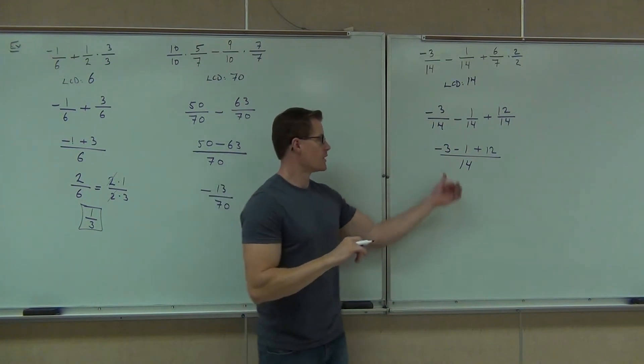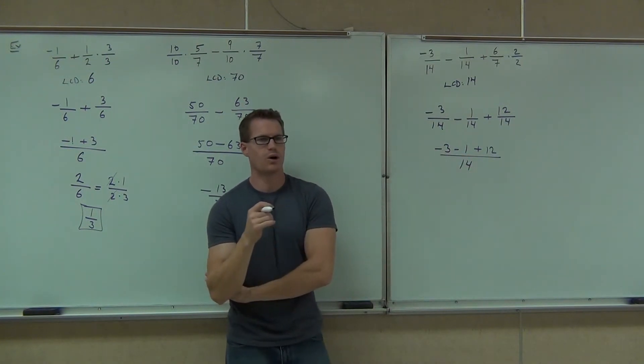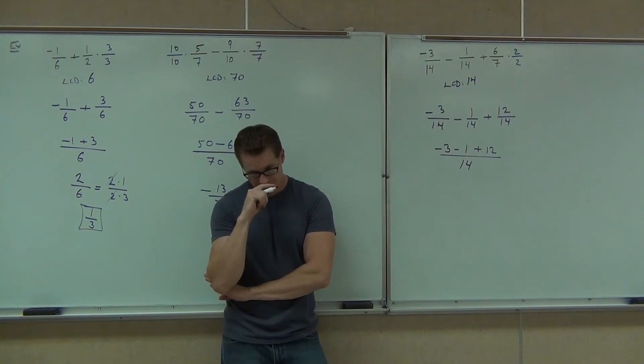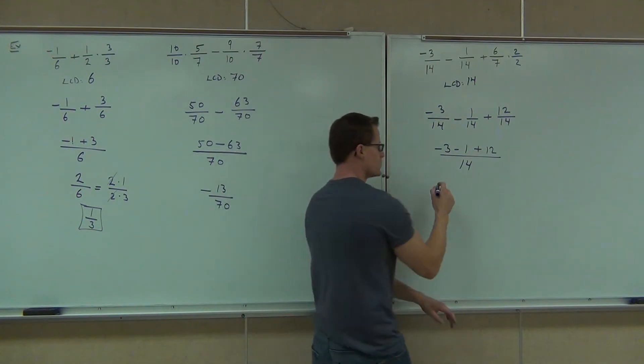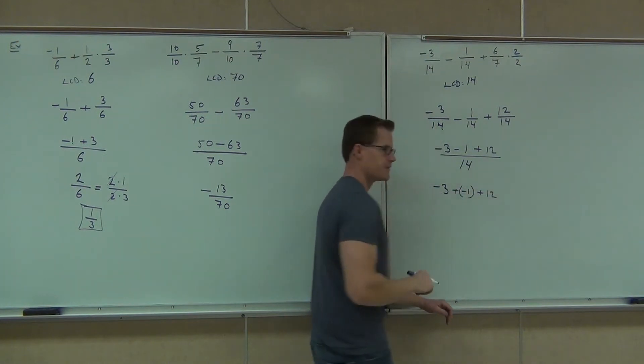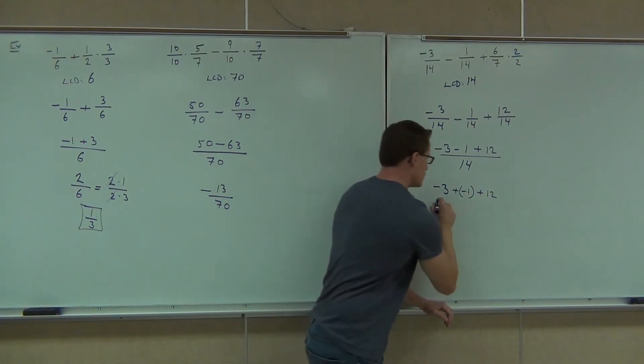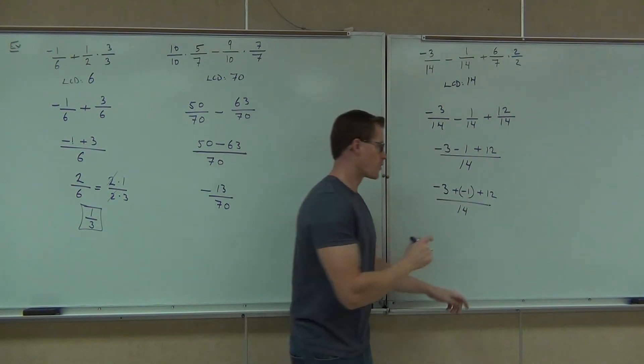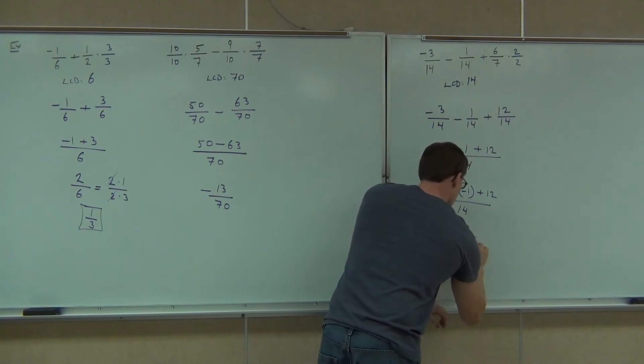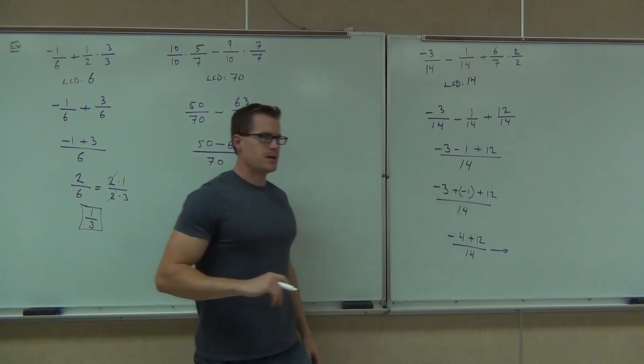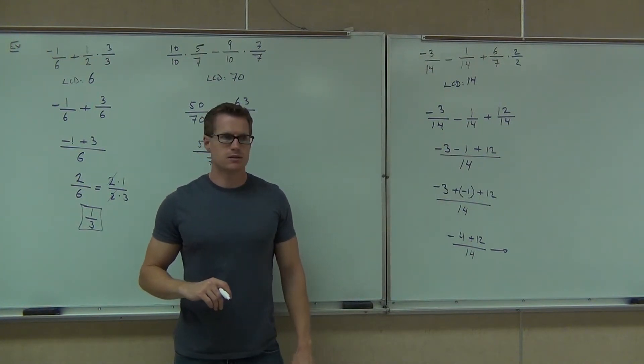We do our math. We know that negative 3, how much is negative 3 minus 1? Negative 4. Very good. If it takes you the transition to make that addition, that's fine. You can certainly do negative 3 plus negative 1, plus 12. That's fine. You can do that still.